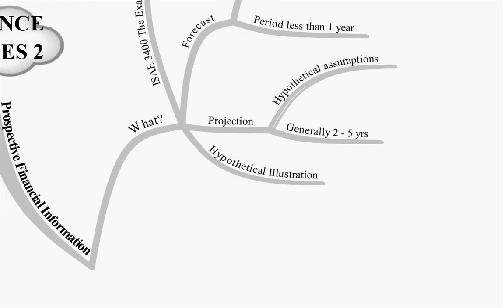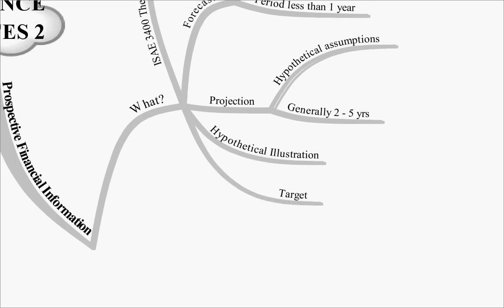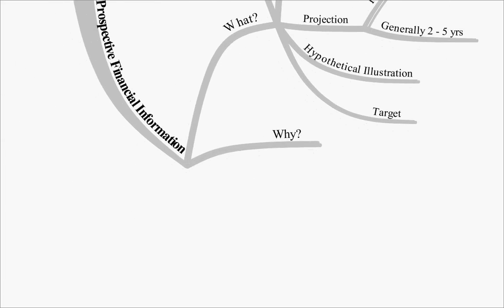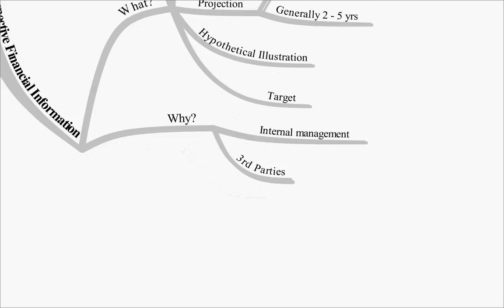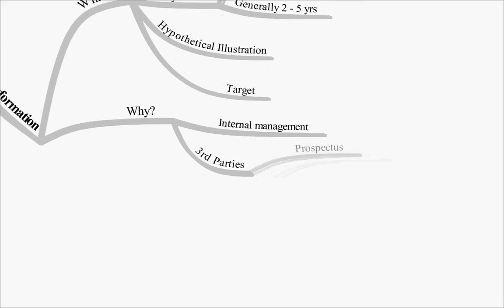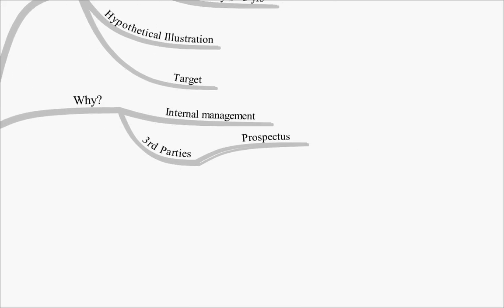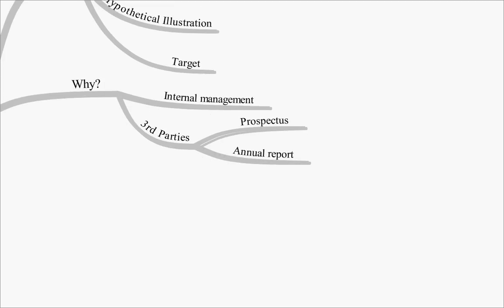It may also be a hypothetical illustration, which again will be less reliable, or it may simply be a target, and you may have to go in as an auditor and say, did they meet the target, or is it realistic? Why may prospective financial information be produced? Well, it may be for internal management looking for forecasts as to what to expect in the next period, or it may be for third parties - for a prospectus, for example, or for the annual report.